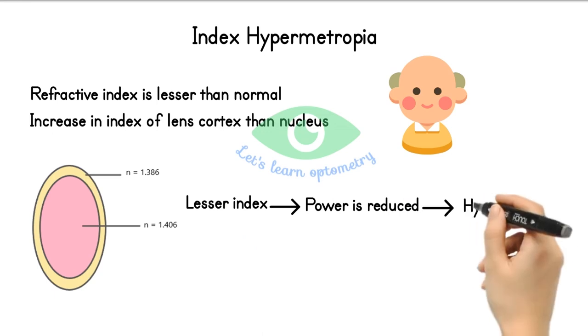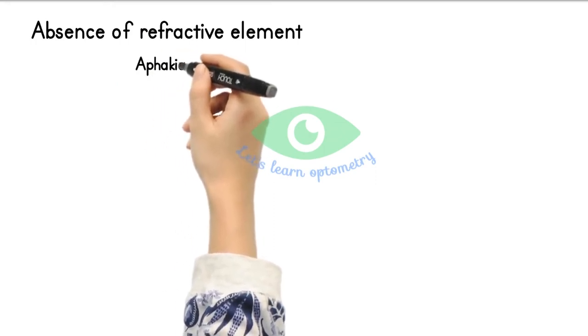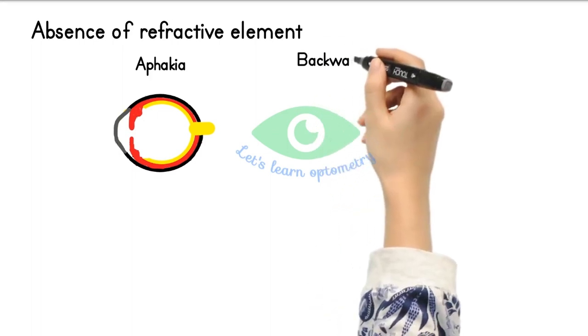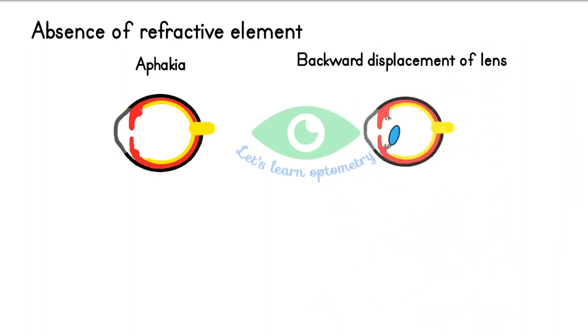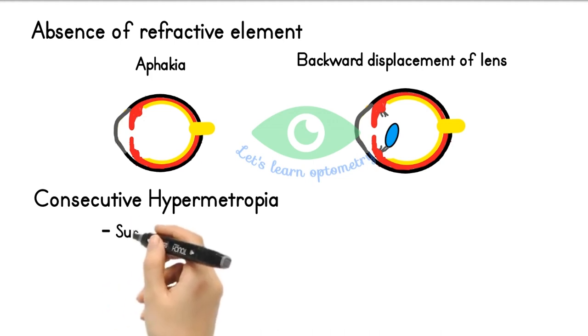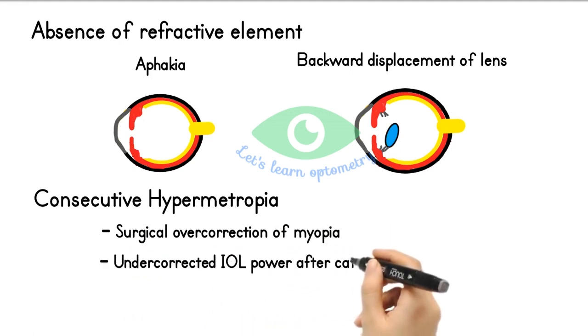Absence of refractive element: Most common cause is aphakia, which means removal of the natural lens. Since the lens contributes majorly to refraction, its absence may produce hypermetropia of up to or more than plus 10 diopters. Consecutive hypermetropia occurs as a result of previous treatment, like surgical overcorrection of myopia or undercorrected IOL power after cataract surgery.